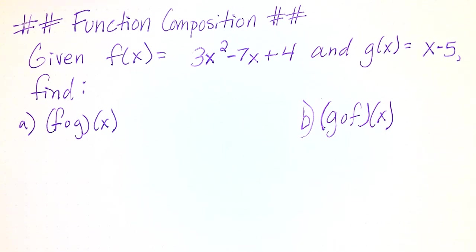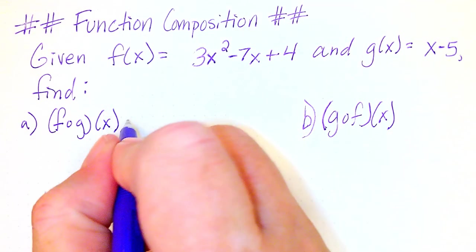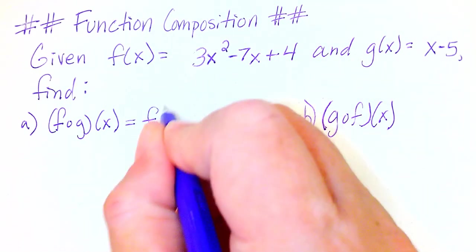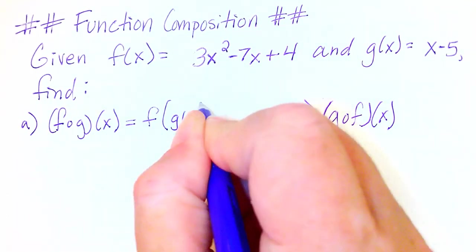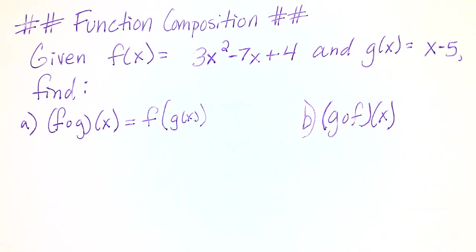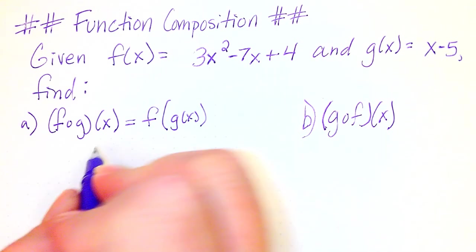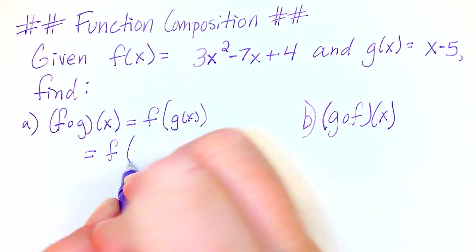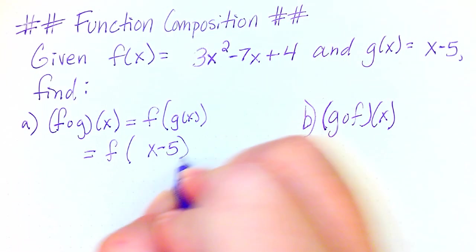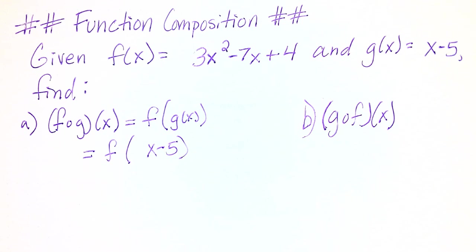So what we want to find is first f of g of x and then g of f of x. We're going to start with f of g of x and we're going to rewrite this expression as f of g of x and now we want to plug in what we know. We know that g of x is x minus 5. So let's substitute that into this expression and now we have f of x minus 5.